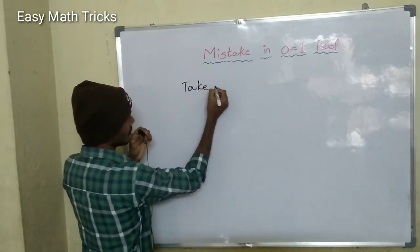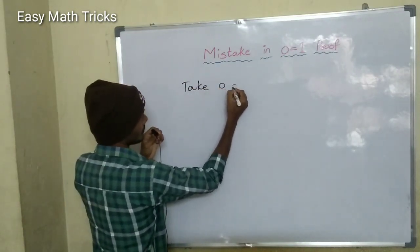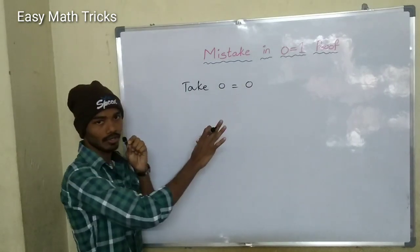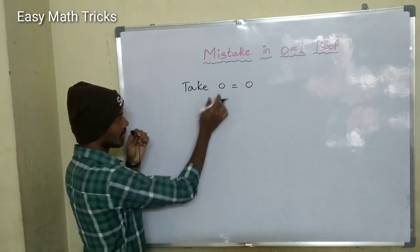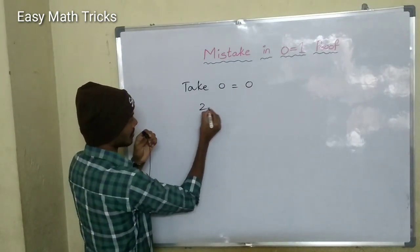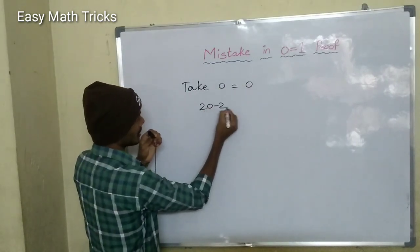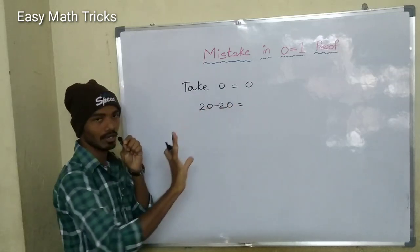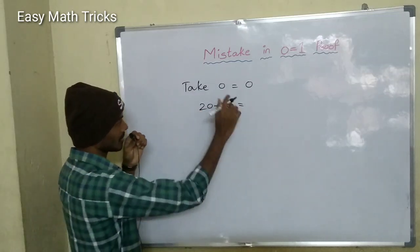Take 0 is equal to 0. If you compare 0 to 0, then it will be equal to 0. 1×0 is equal to 0. If you increase 0, it becomes 20 minus 20. That's why we will be talking about how 0 is equal to 0. Now, this will be 20 minus 20.